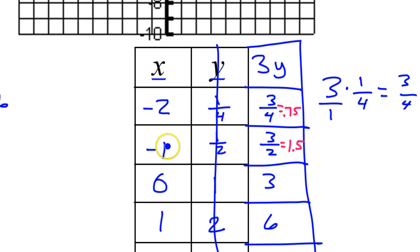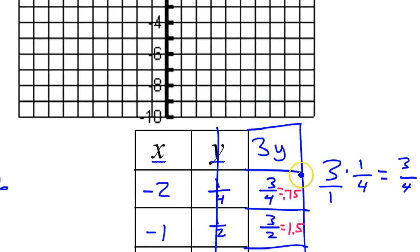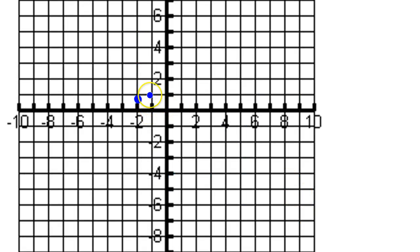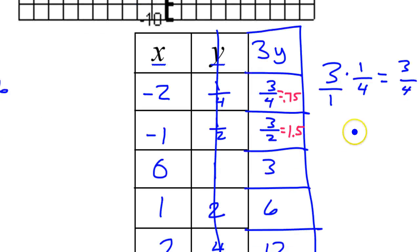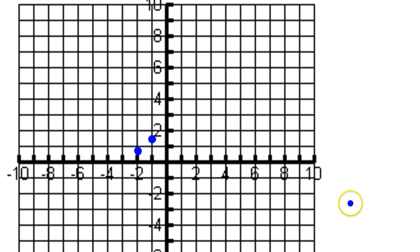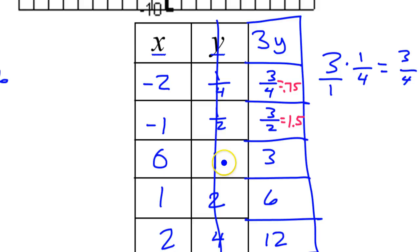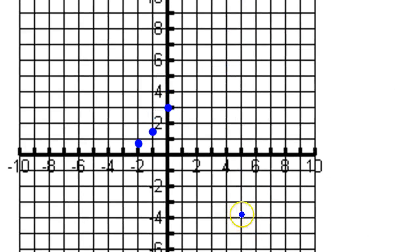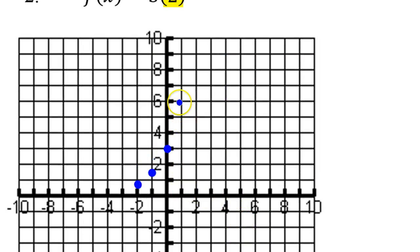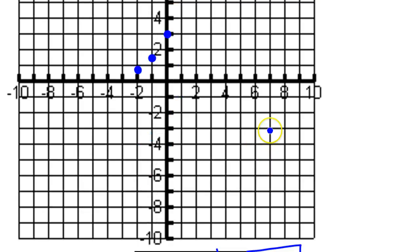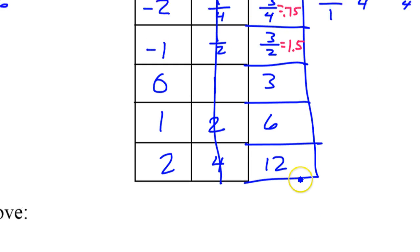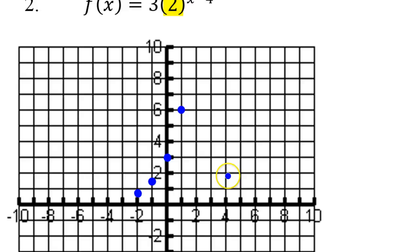I have negative 1 and 1.5, so here's negative 1 and 1.5 would be about there. 0 comma 3 is here. 1 comma 6 is right here. And finally, 2 comma 12, which is a little bit off the graph, but I'm just going to estimate. It would be about there.